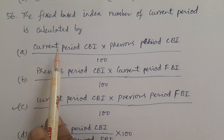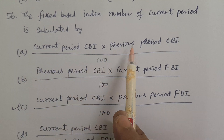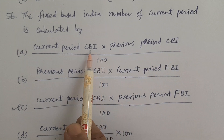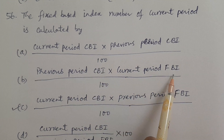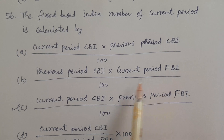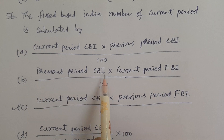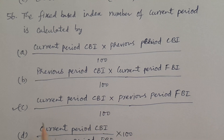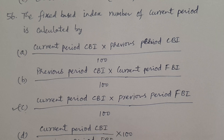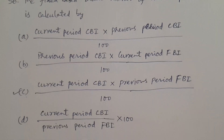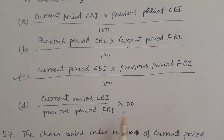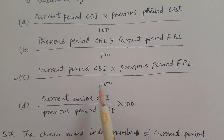Options: A. Current period CBI into previous period FBI divided by 100 (CBI = chain base index number, FBI = fixed base index number). B. Previous period CBI into current period FBI divided by 100. C. Current period CBI into previous period FBI divided by 100. D. Current period CBI divided by previous period FBI into 100. Answer is C.